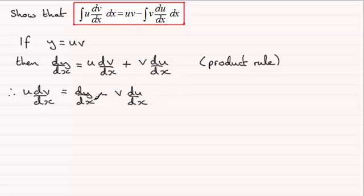Next I'm going to integrate, with respect to x, both sides. So what we've got here then is the integral of u dv by dx. We're integrating this with respect to x, so put the dx there.